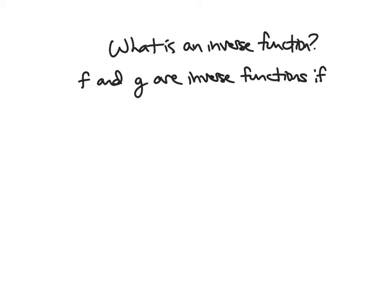So we say that two functions, f and g, are inverse functions if f of g of x and g of f of x are both just the function x. So what does this mean? This means that basically f and g undo one another.